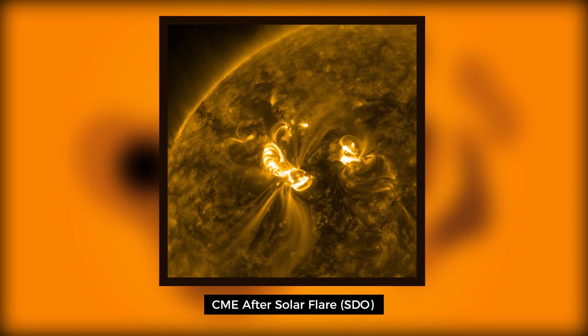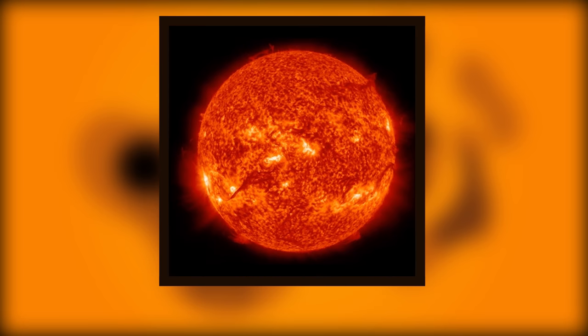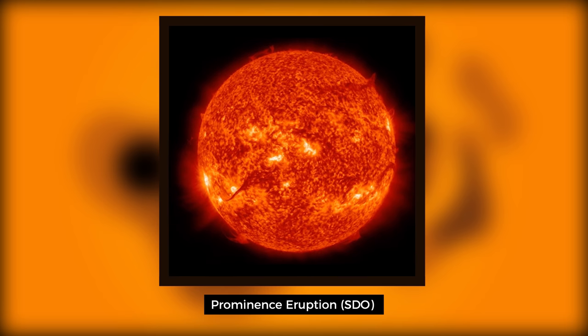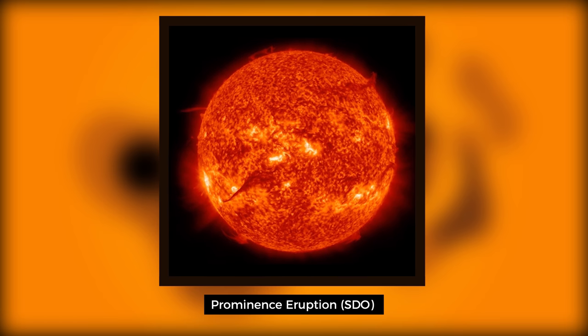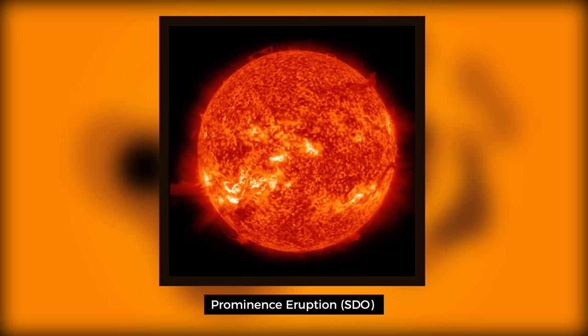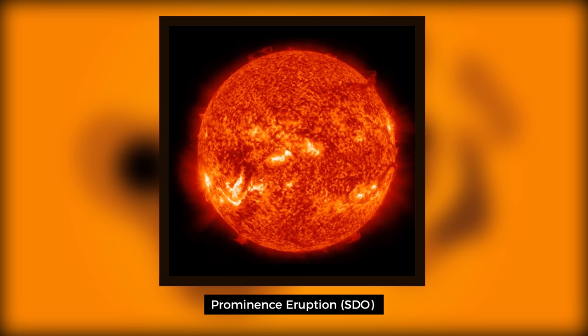It is also worth noting that CMEs can occur in the absence of flares from unstable structures, such as prominences and filaments, which can spontaneously lift off the sun.